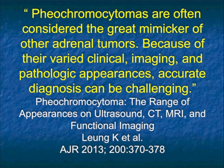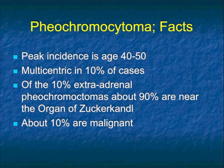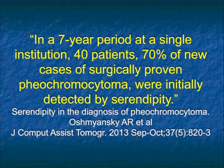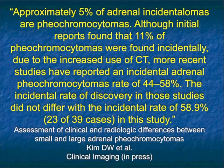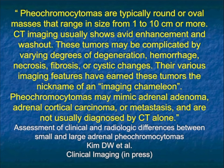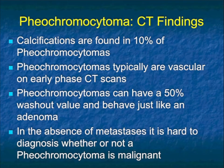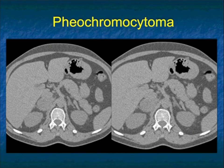Pheochromocytomas are one of the great mimickers because of their appearance. The age range is very similar to adrenal carcinoma. Multicentric in 10% of cases, and 10% are malignant. Interestingly, the majority of pheos now are incidental findings — up to 70% — and 5% of adrenal incidentalomas are pheos. Pheos range up to 10 centimeters. One of their names is 'imaging chameleon,' meaning they can mimic adrenal adenoma, adrenal carcinoma, or mets. Pheos can have calcifications but less frequently, about 10% of the time. They're vascular, they wash out, but so can primary adrenal carcinomas. In terms of judging malignancy, you're really not able to.